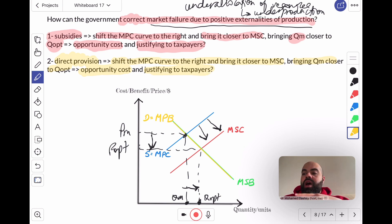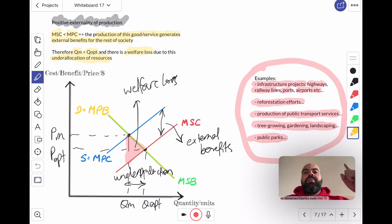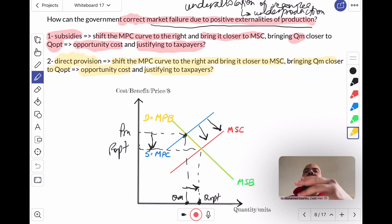So in this video, I introduced positive externalities of production, I gave examples of products that generate these externalities. I talked about the diagram, the welfare loss, and the external benefits. And I talked about strategies the government can use to correct this type of market failure, which includes subsidies and direct provision. Please like, share, subscribe, check out the links in the video description below, consider becoming a channel member. It's a great way to access exclusive content and to support the channel as well. If you enjoy these videos, have a great one. Bye.